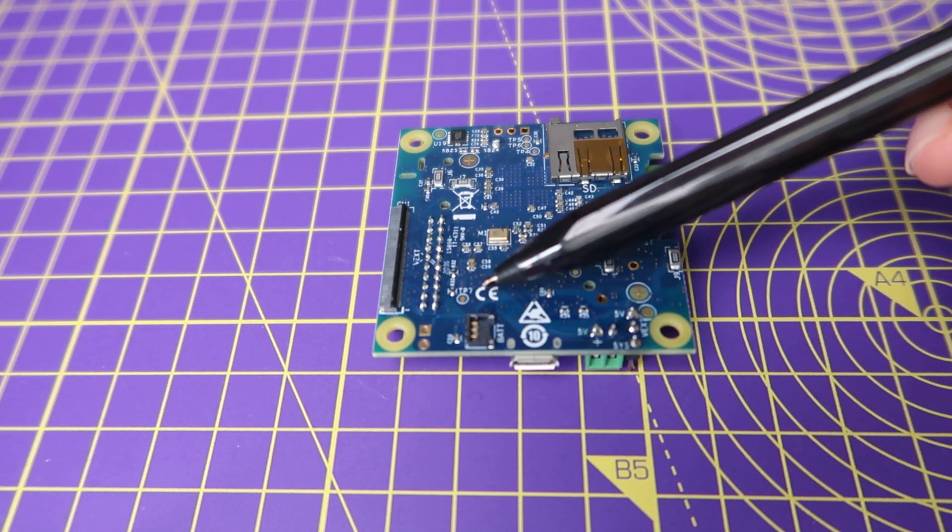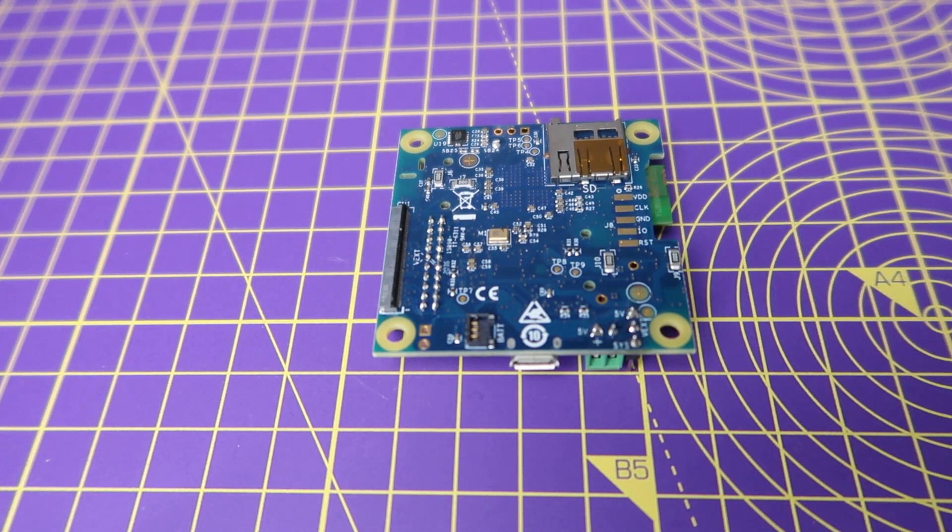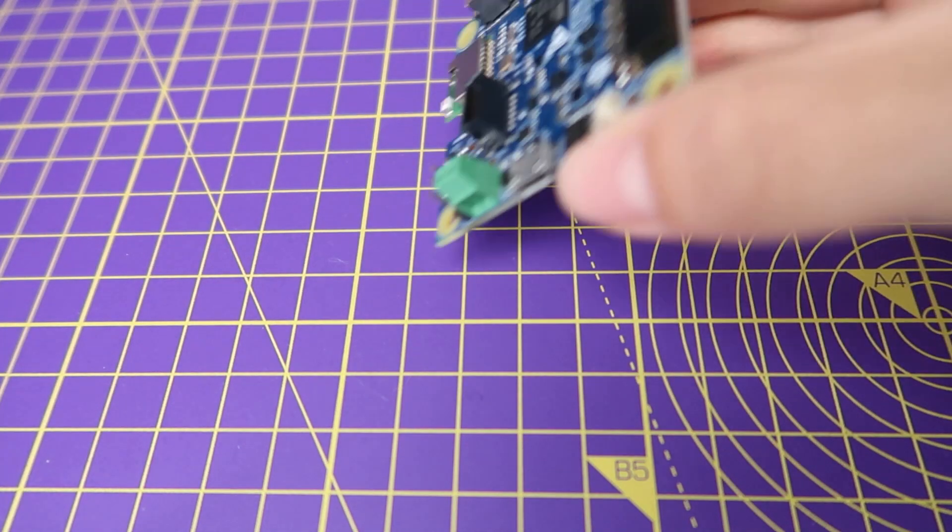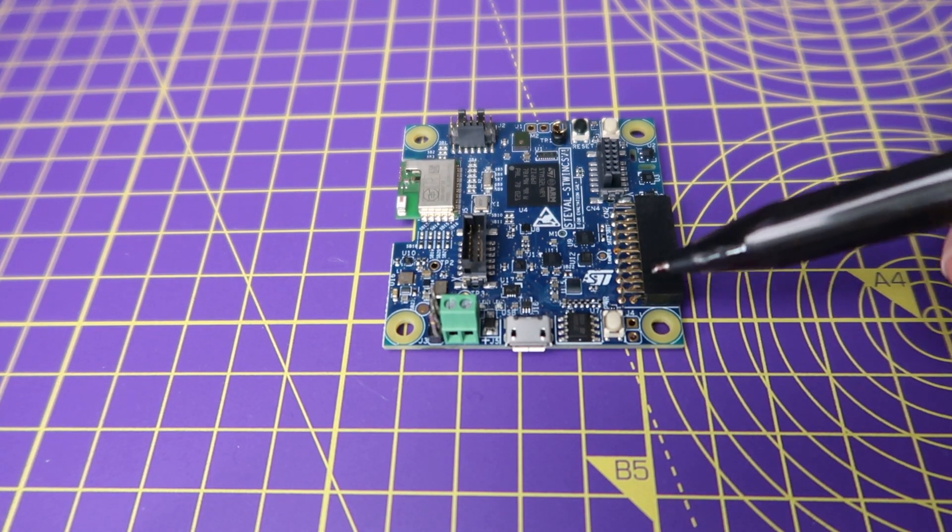And lastly, the core board can be powered using the LiPo battery provided in the kit or using an external 5V power supply.